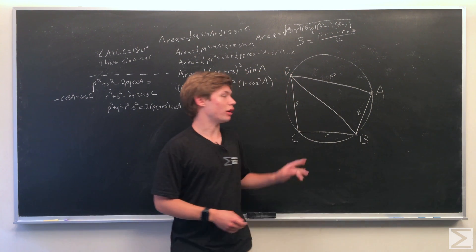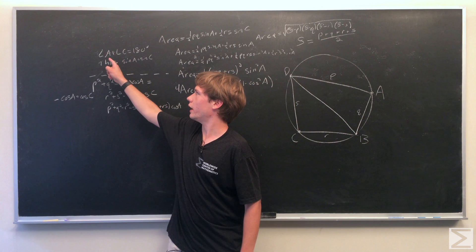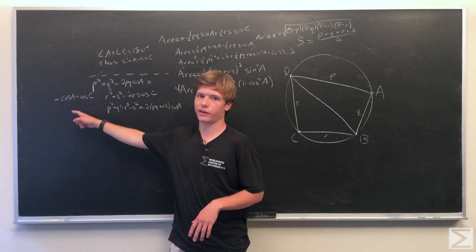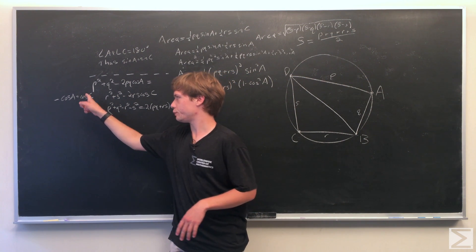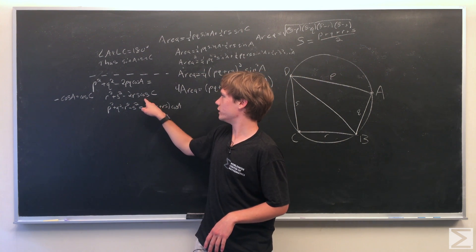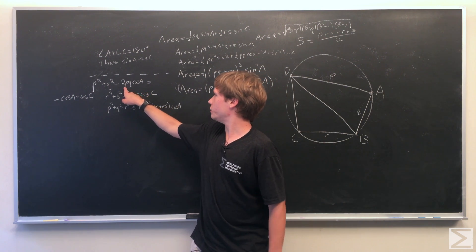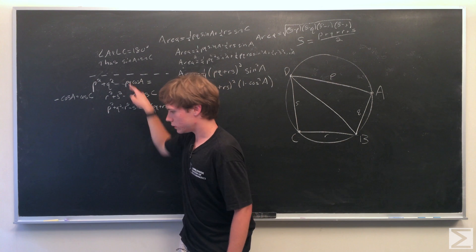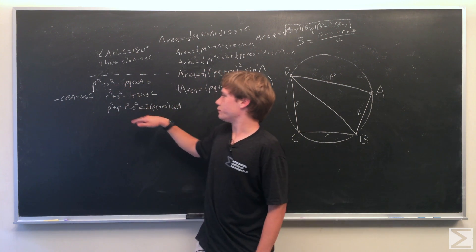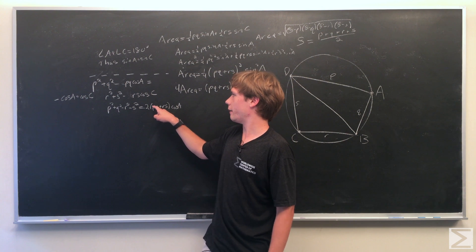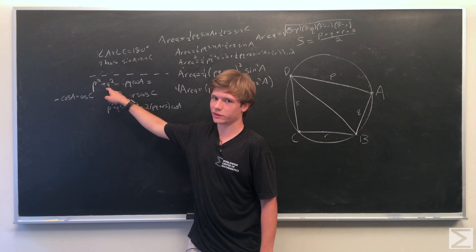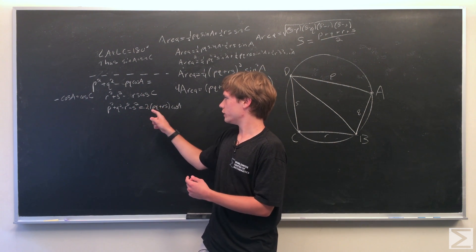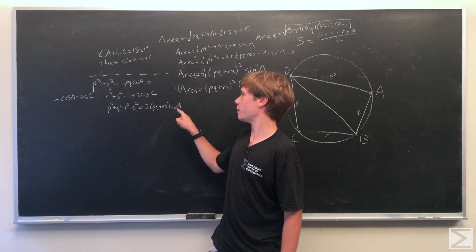Again, because it's a cyclic quadrilateral, we have the identity that angle a plus angle c is equal to 180. But in this case, that means that cosine of a is the opposite of cosine of c. So we plug that in here, bring the two p q cosine of a to this side, bring this to this side, and then we bring the r squared plus s squared to the left side. And we see that p squared plus q squared minus r squared minus s squared is equal to two times p q plus r s times cosine of a.